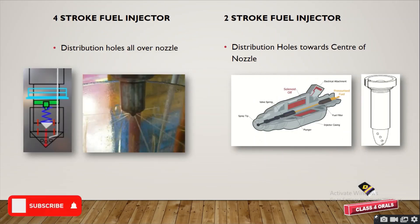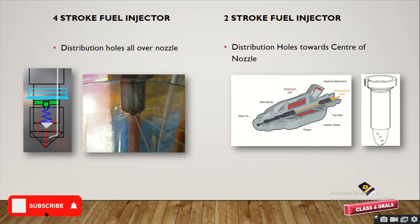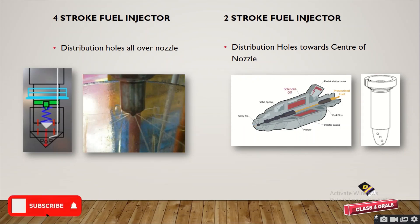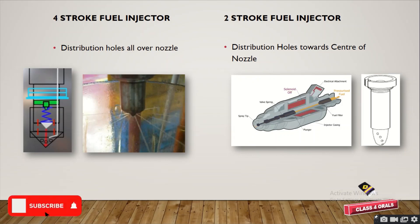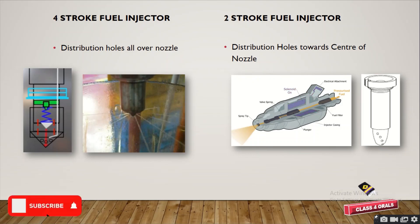The distribution holes for the 4-stroke fuel injector are lying evenly throughout the nozzle over its area. You can see in the picture on the left the distribution holes and the spray pattern for the 4-stroke fuel injector. Whereas in the 2-stroke, on the right side, you can see the distribution holes are towards the center of the nozzle, and in the figure on the extreme right the holes are also focusing on the center.